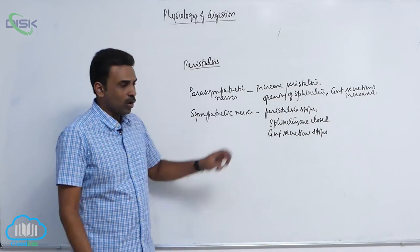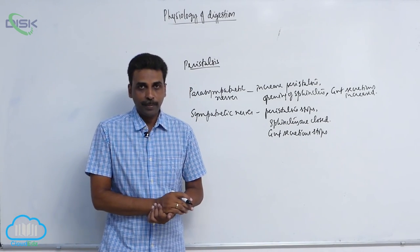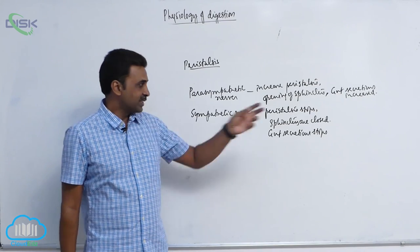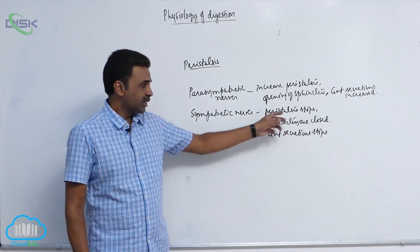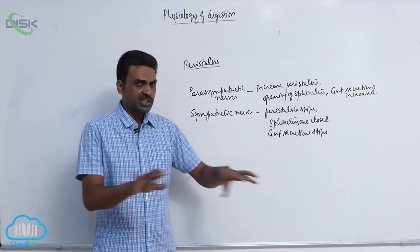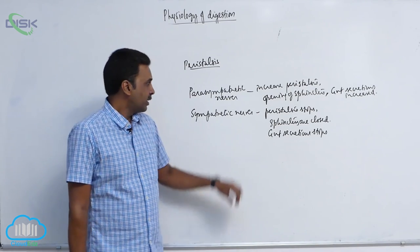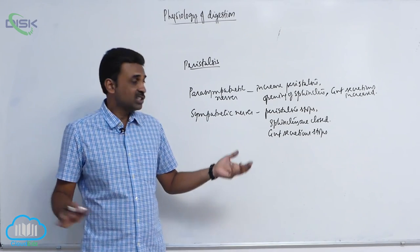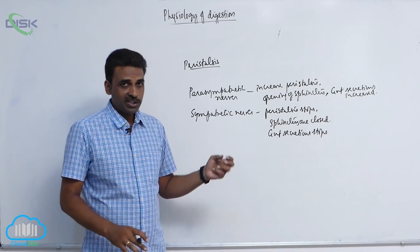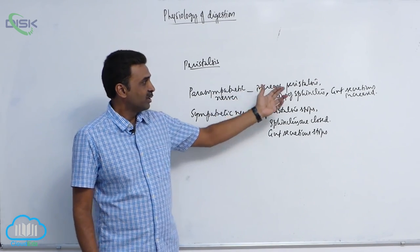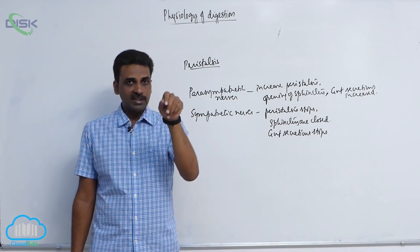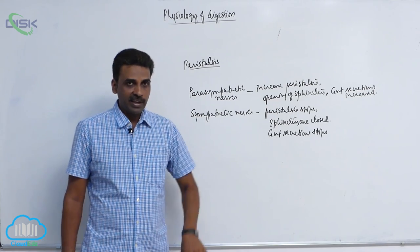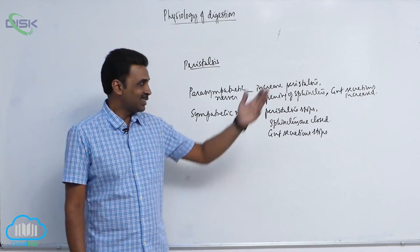So sympathetic and parasympathetic nerves have opposite functions. Under emergency conditions, sympathetic nerves are stimulated: sphincters are closed, peristalsis stops, and gut secretions stop. Under resting conditions — rest and digest — parasympathetic nerves are stimulated: sphincters open, peristalsis increases, and gut secretions increase, referring to secretions from all digestive glands.